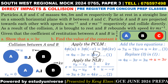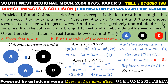Now we use u = 3v to find the constant k. Substituting u = 3v into Equation 3 (u = kv): 3v = kv. Since v cannot be zero, the v's cancel, giving k = 3.